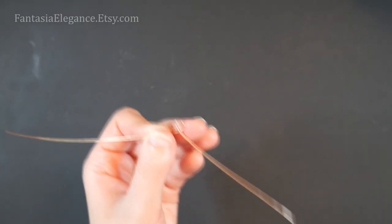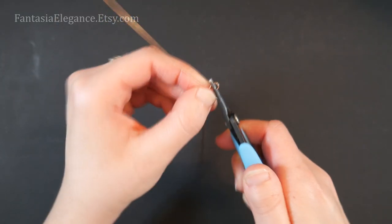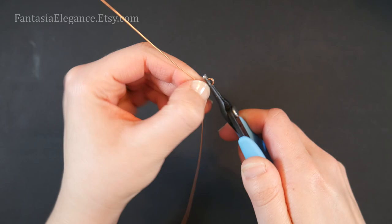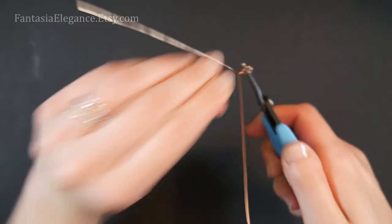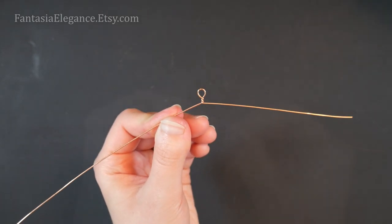And then we're going to grip that teardrop with your chain nose pliers and just put one or two twists in these tails. I'm going to do one, two—two little twists just like that.